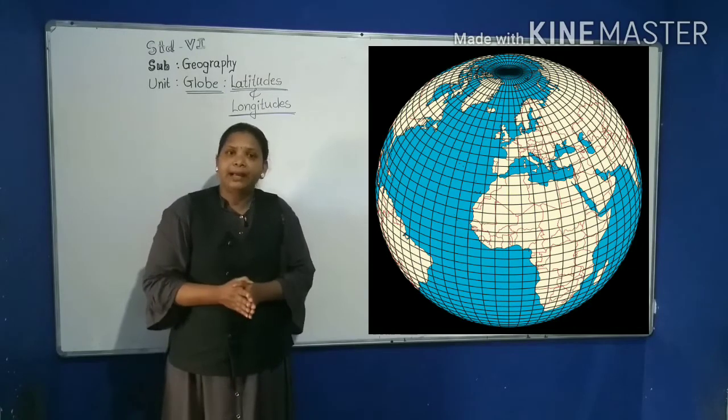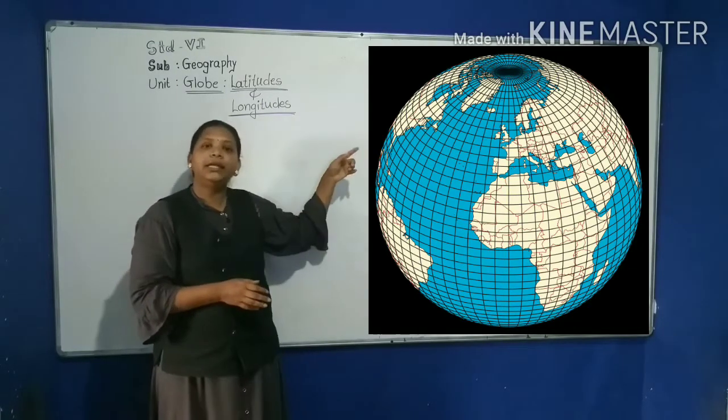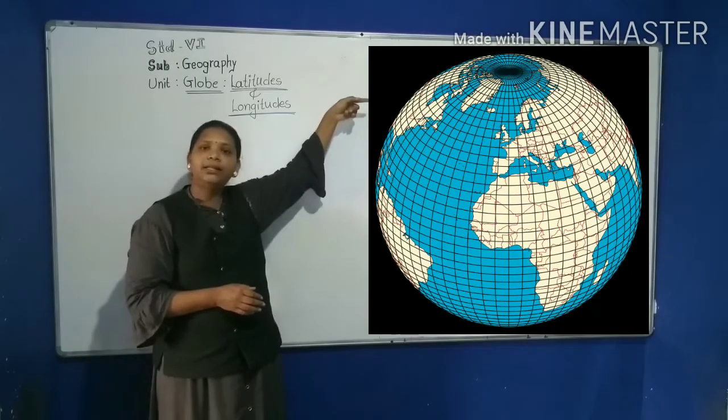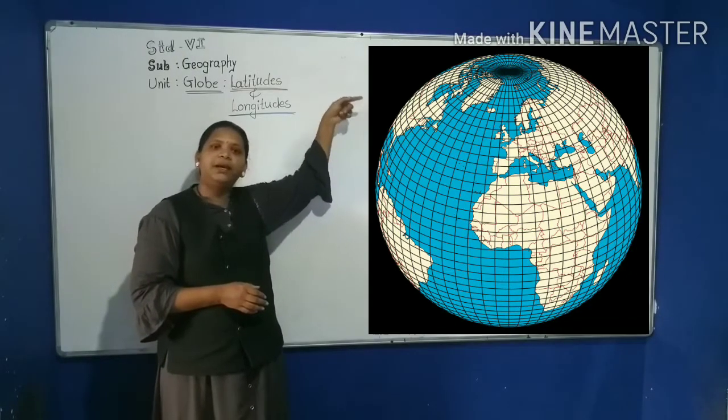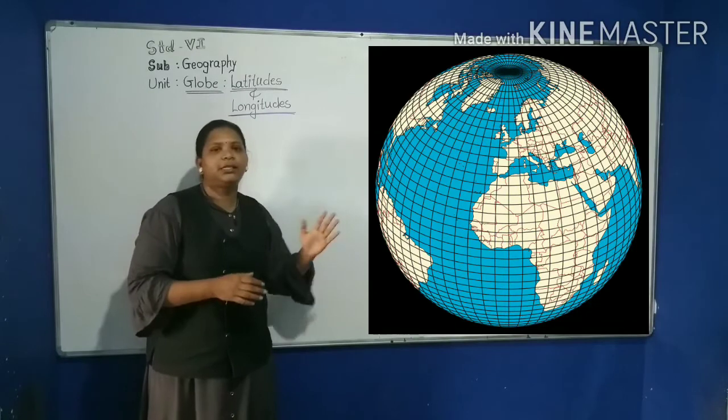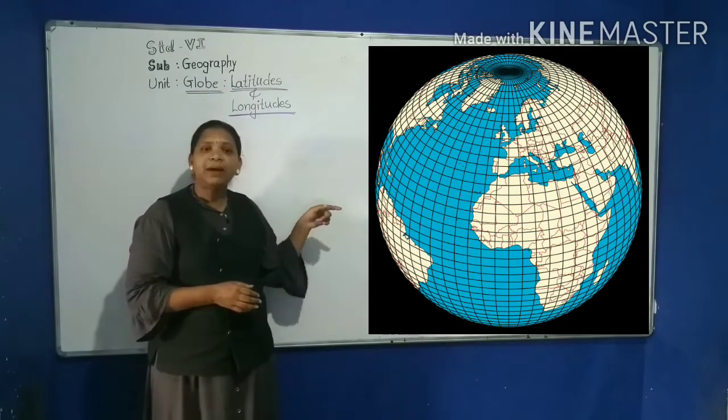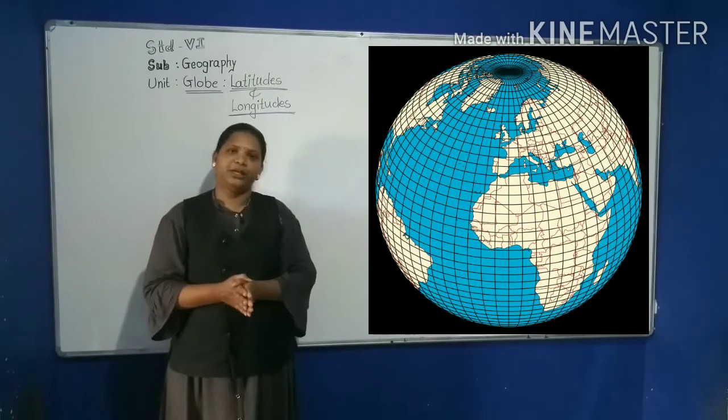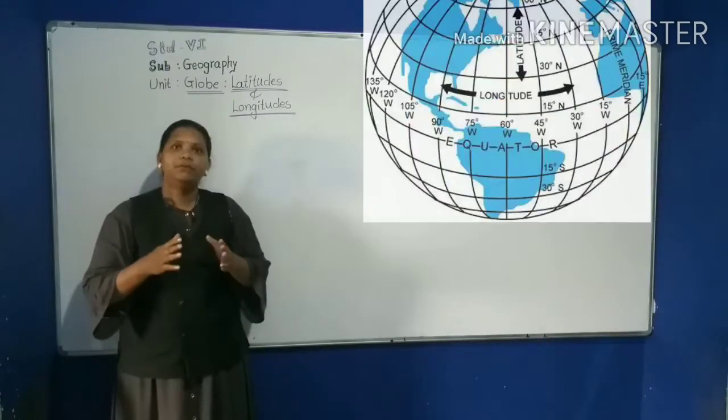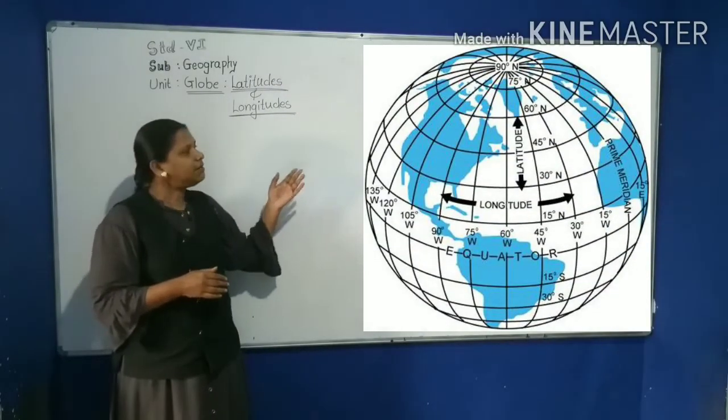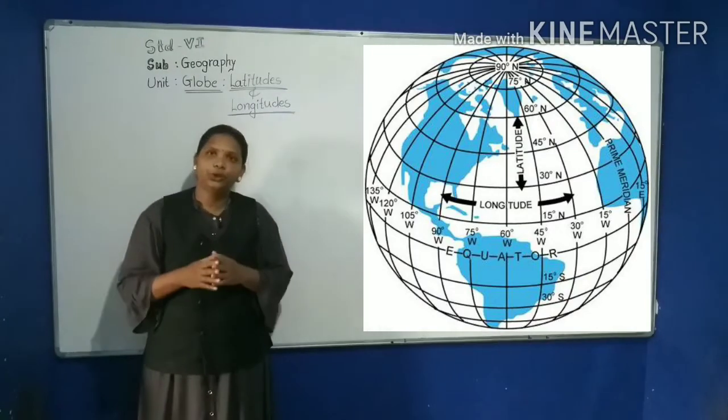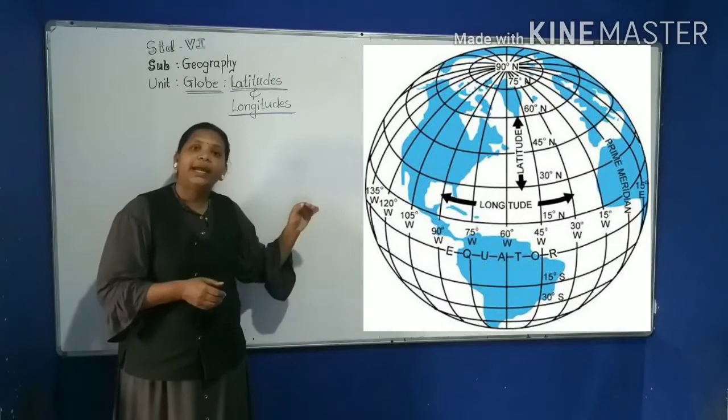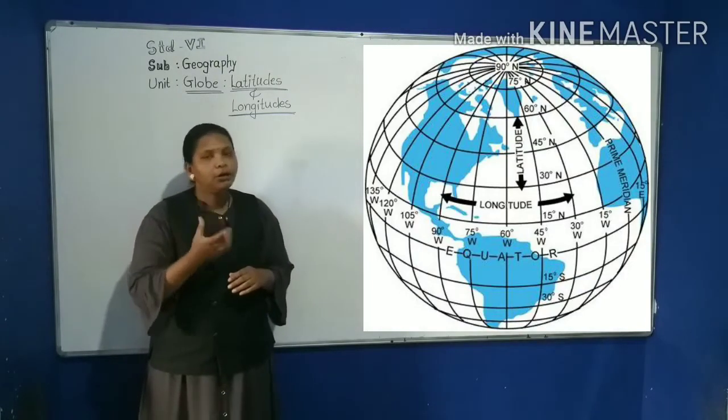There are 90 parallels in the northern hemisphere and 90 in the southern hemisphere. These imaginary lines are used as reference points to locate the place on the globe.